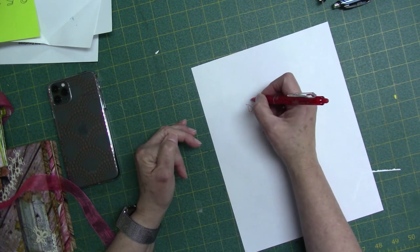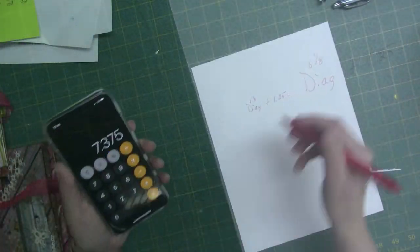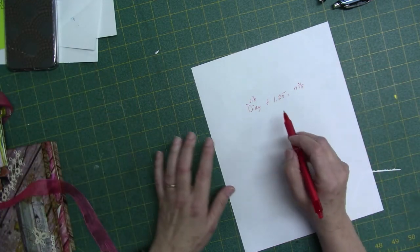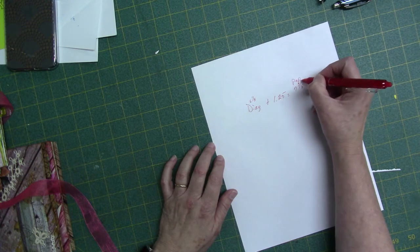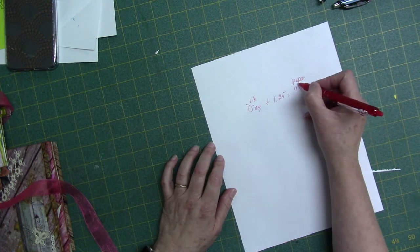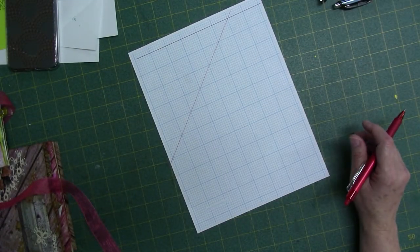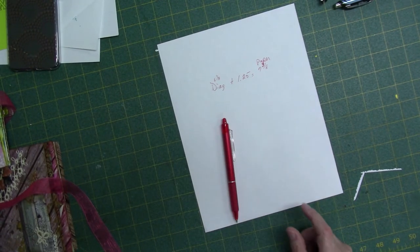So mine was 6 and an eighth. So I'm coming up with 7 and 3 eighths for the size of the paper. So this is the square of paper that I'm going to cut, and it's always a square when you do this type of an envelope. So now I'm going to go and cut a piece of paper 7 and 3 eighths square.